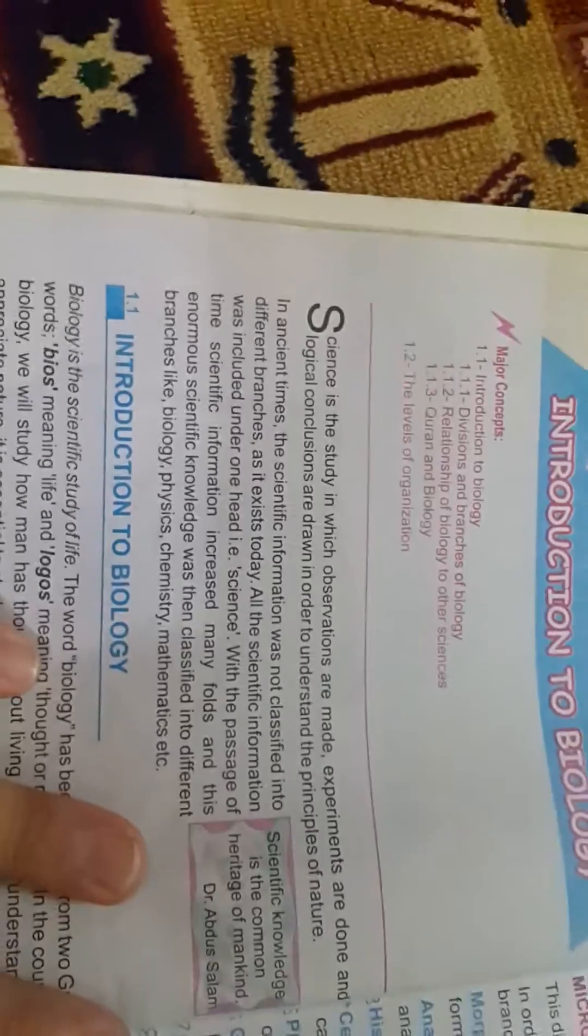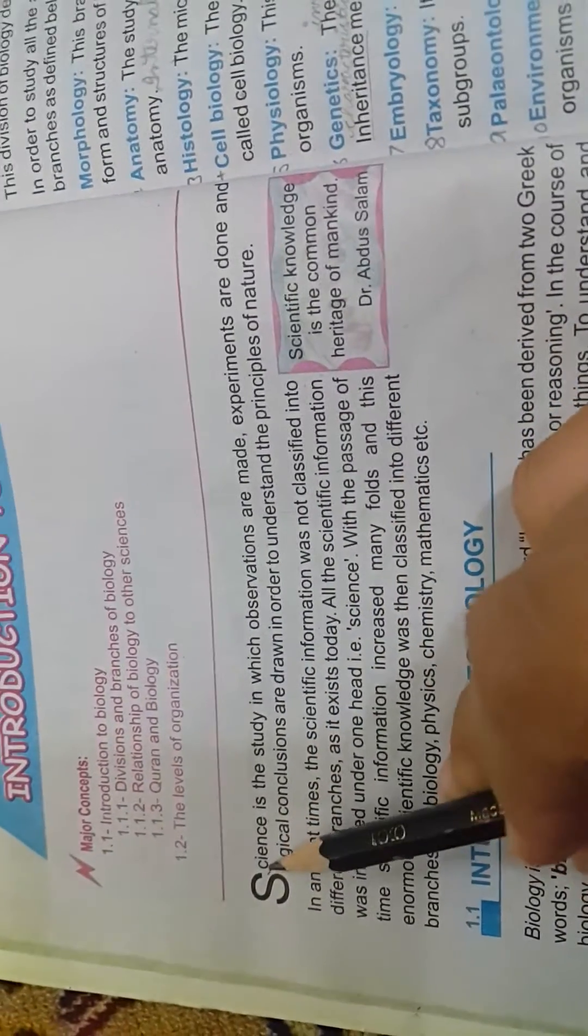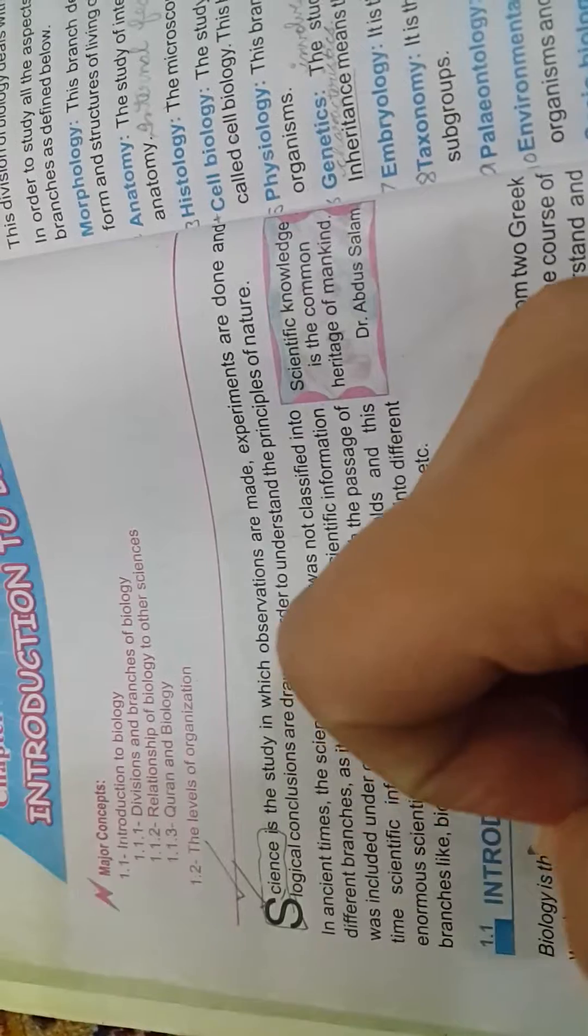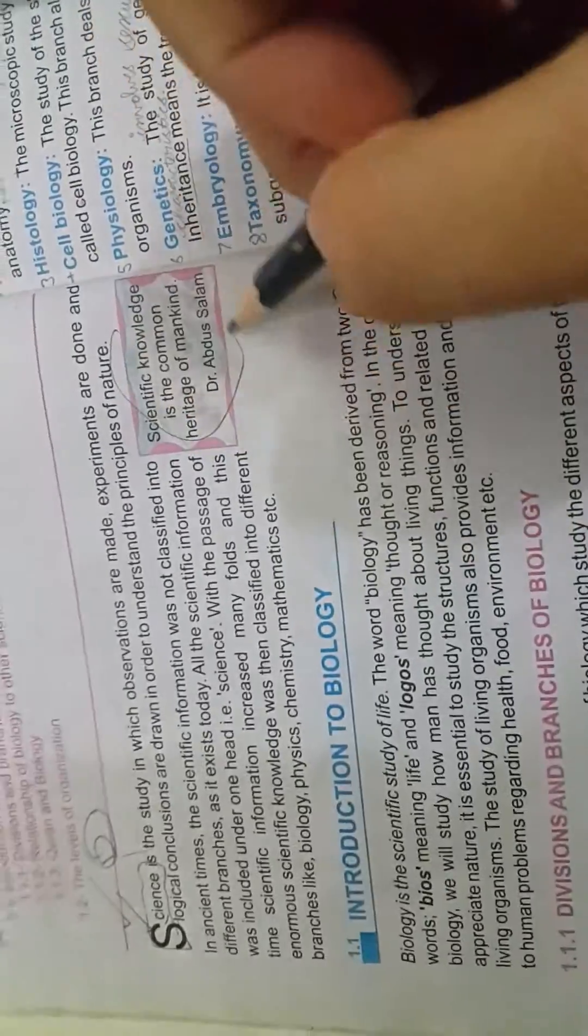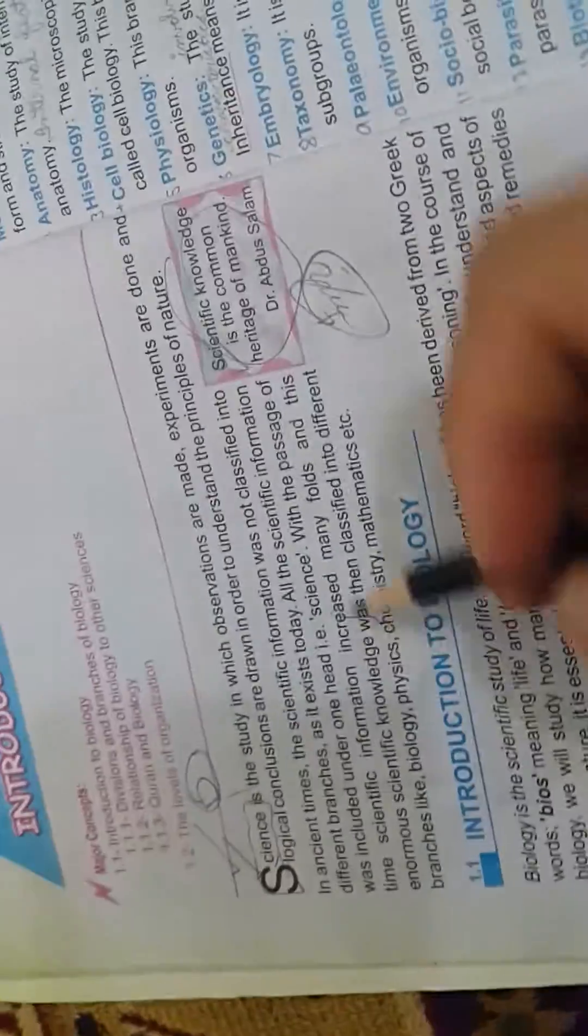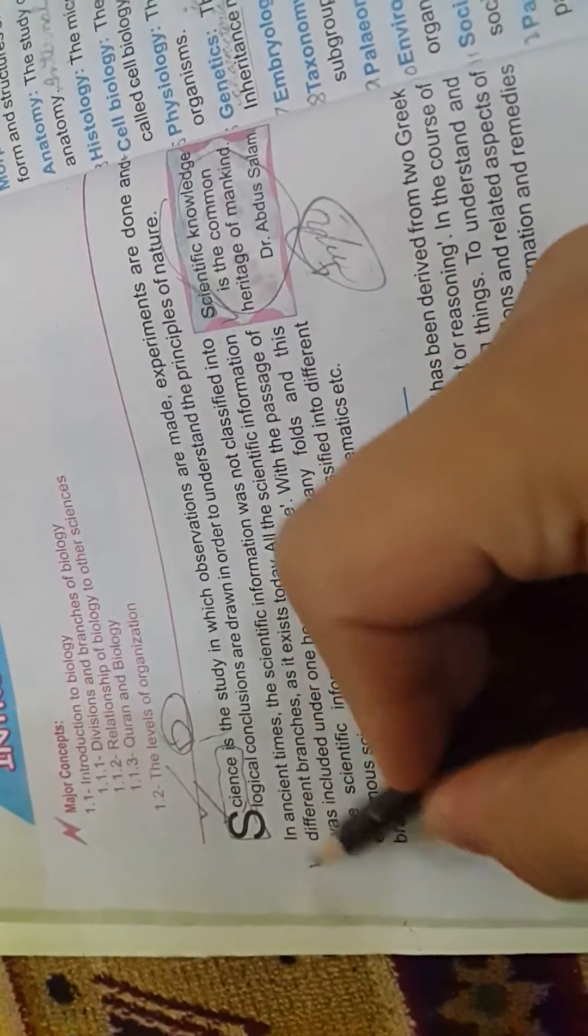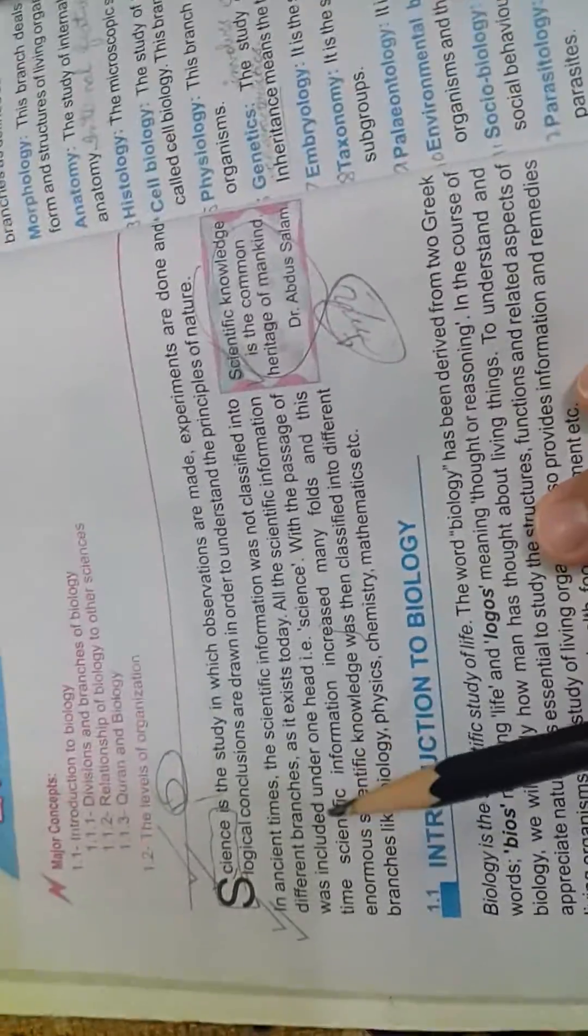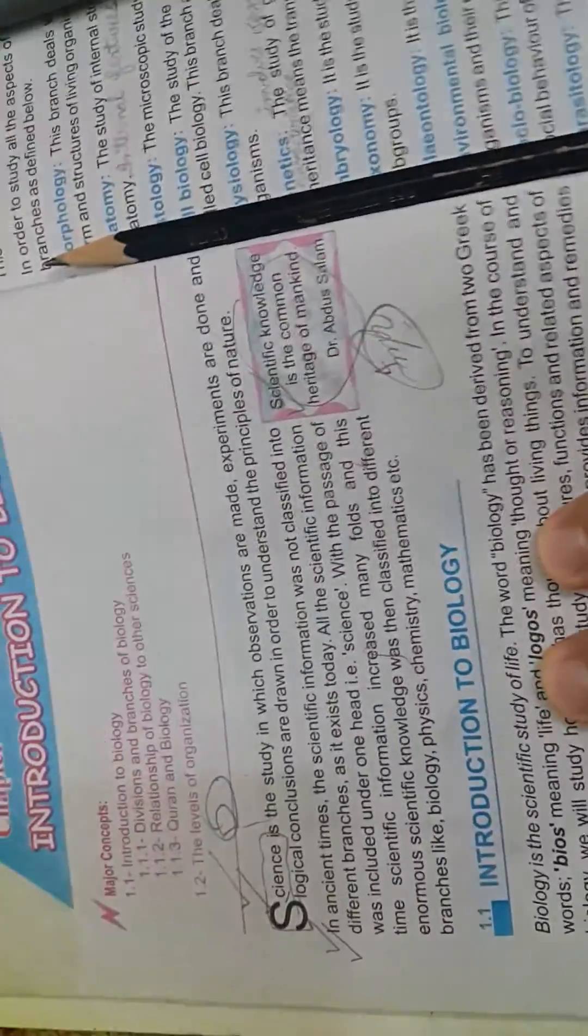In the first para, they're just giving the definition of science. I want you to just underline this science definition. This is very important. Just mark it as D. Next, they are saying this is the famous saying of Dr. Abdus Salam. Mark this, it's also important. The next, you need to just read it twice or thrice, however much you can understand it. They're saying that before biology, chemistry, physics, mathematics, these science subjects came, before it was only considered as one, that is science.